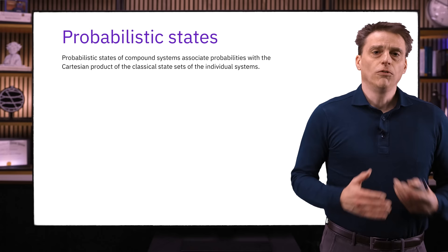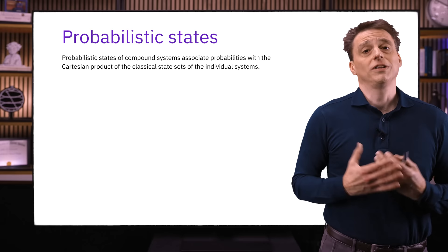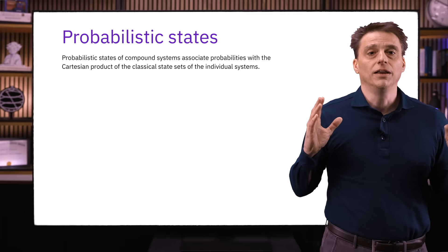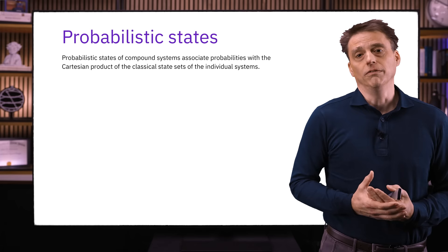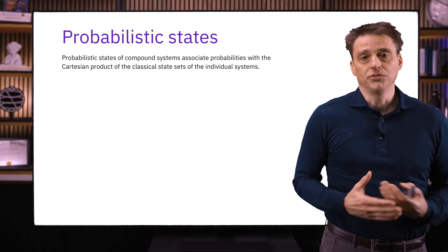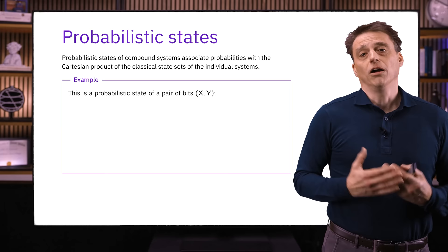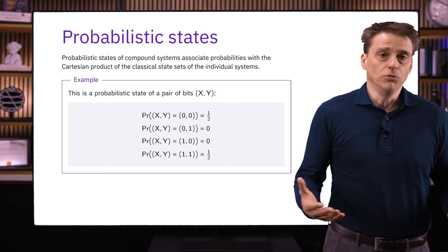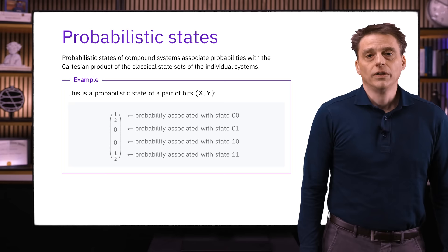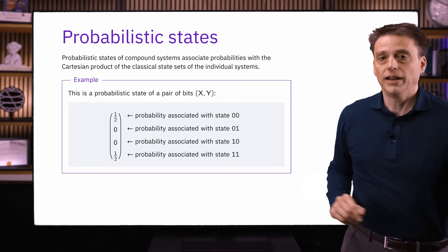Moving on to probabilistic states: we already know from the previous lesson that a probabilistic state associates a probability with each classical state of a given system. If we have a compound system — where we've taken two or more systems and view them collectively as a single system — then a probabilistic state must assign probabilities to elements of the Cartesian product of the individual system's classical state sets. For instance, supposing X and Y are bits, here's an example of a probabilistic state of X, Y: the probability that both bits are zero is one-half, and the probability that both bits are one is one-half, so the two bits never disagree. We can alternatively write it as a vector, following the lexicographic convention for ordering classical states.